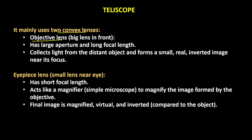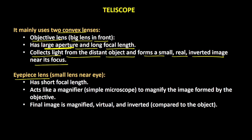One is called the objective lens and the other is called the eyepiece lens. The objective lens is a big lens at the front; it has a large aperture and a long focal length. The reason this lens has a large aperture is so that the maximum amount of light can enter the telescope. It collects light from the distant object and forms a small, real, and inverted image near its focus.